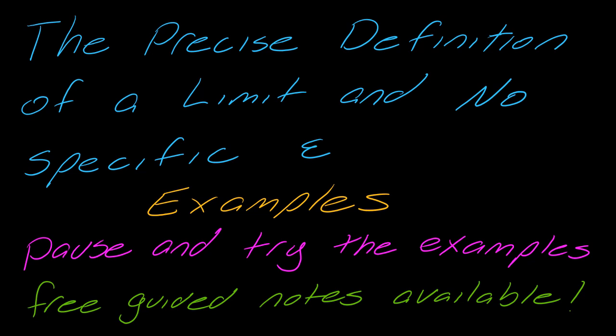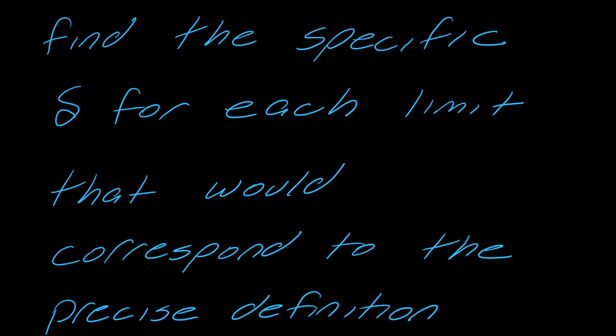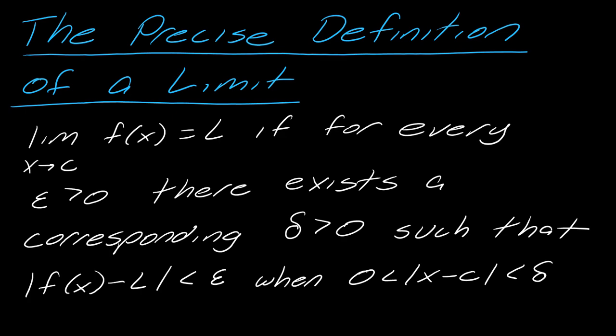This is a continuation of my examples regarding the precise definition of a limit, or the epsilon-delta definition. In these examples, we're going to look at examples with no specific epsilon where we want to find the delta. So we're trying to find the specific delta for each limit that would correspond to the precise definition. This is something you should already feel comfortable with, and you should already have been working with numeric values of epsilon. If all of this sounds like something you've never heard of, maybe go back and watch some of those other things.